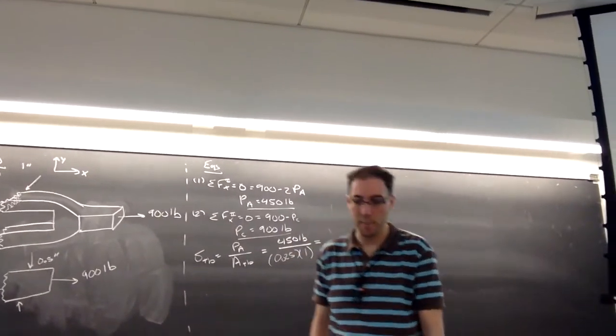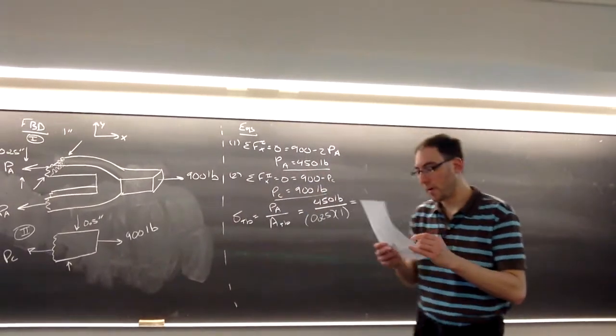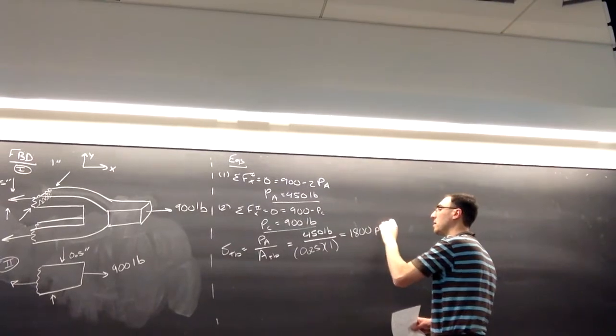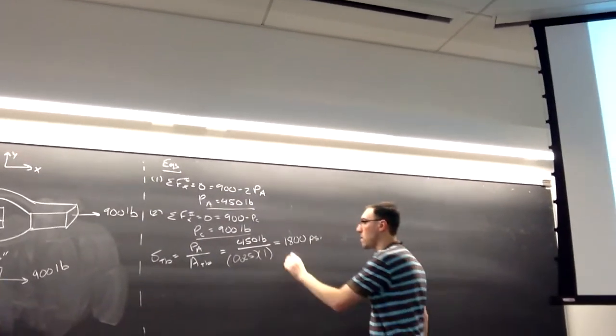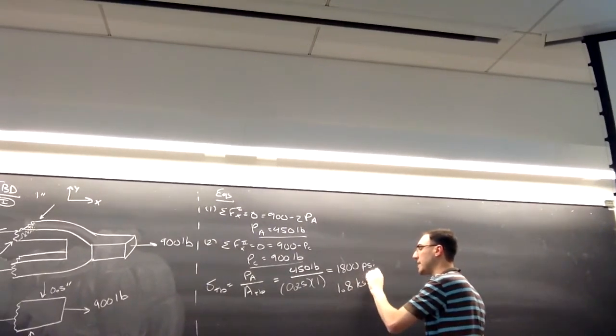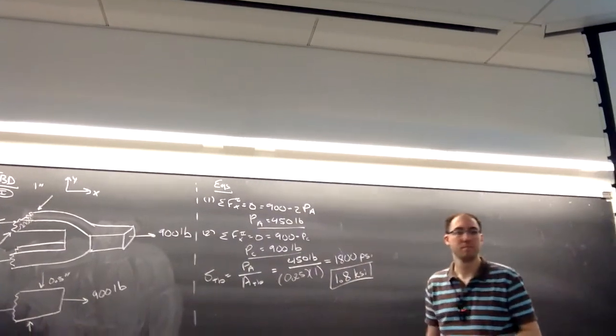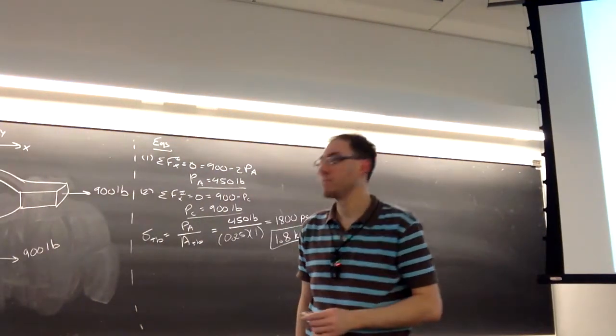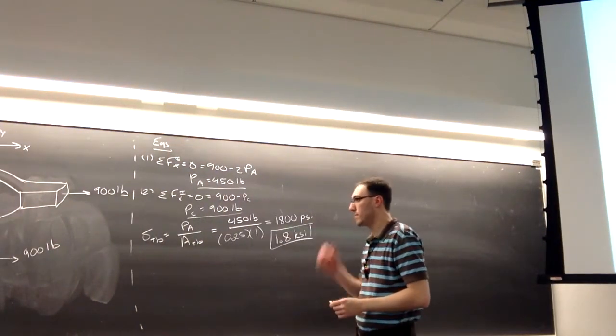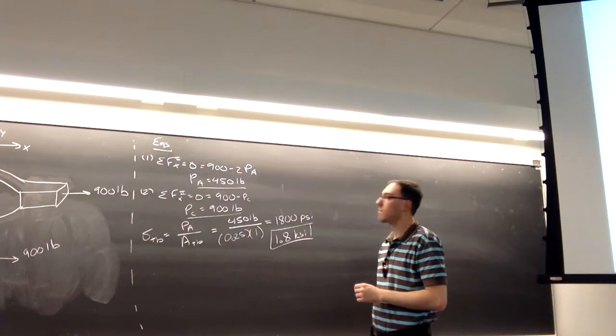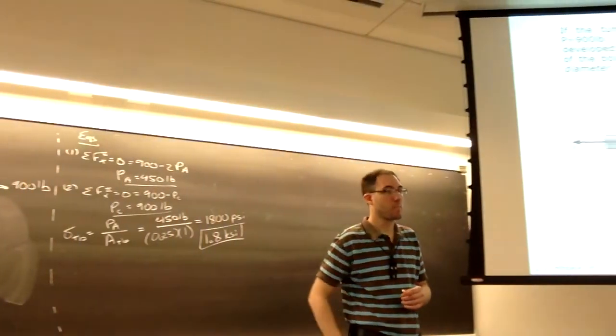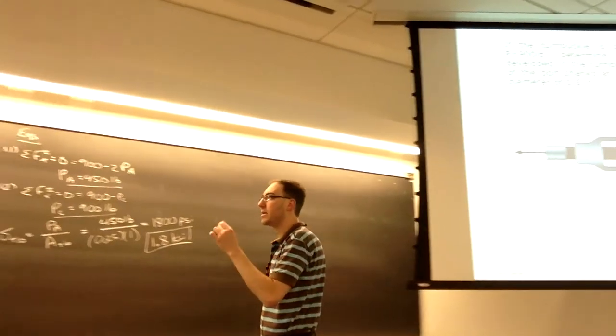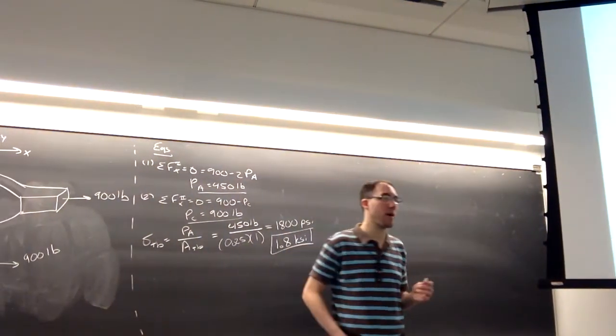450 divided by 0.25, I'm going to get 1,800 psi, which a little bit more simply I can represent as 1.8 ksi. So that's the stress in the turnbuckle. Remember, it's dependent on the internal force and the cross-sectional area.